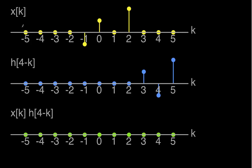Okay. And finally, for the case where n is equal to four, I have h of minus k, so it's flipped about zero and then shifted four to the right. And you can see that everywhere this guy is zero, the product of this guy with x will be zero. Everywhere this guy is not zero, x is zero, so the product is going to be zero. So y of four will be zero.